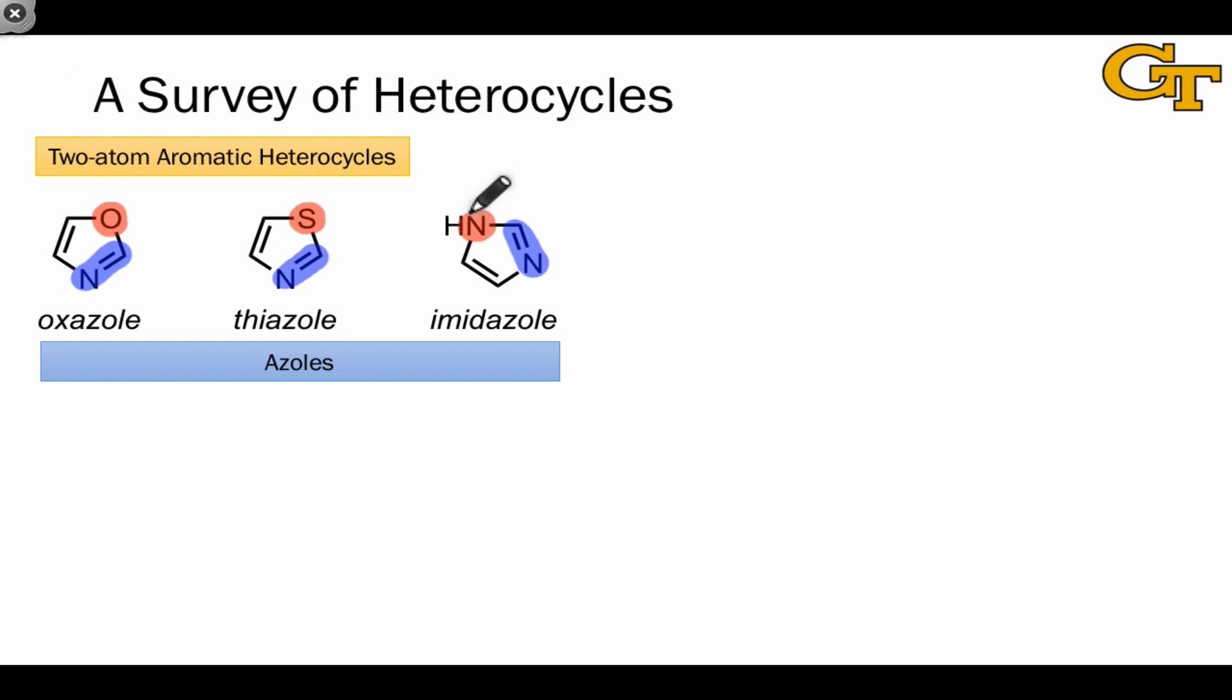An important question with the azoles, especially imidazole, which contains two nitrogen atoms, concerns the basicity of the lone pairs on the two types of hetero atoms. Which hetero atom would we expect to be more basic on the basis of electronegativity and the nature of the electrons on these atoms, whether they're pi electrons or part of the sigma system?